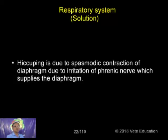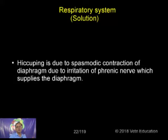that irritation stimulates the phrenic nerve, which is coming from the medulla oblongata, which stimulates the diaphragm to undergo sudden contraction — that is called spasmodic contraction — and that is one of the reasons for hiccupping.